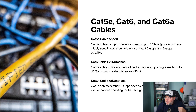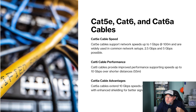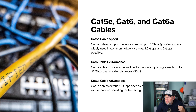Cat6 is going to be able to get 10 gig over shorter distances, up to 55 meters. And Cat6a is going to give you 10 gig up to 100 meters.